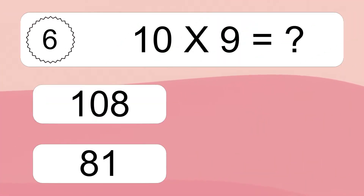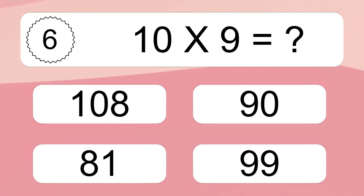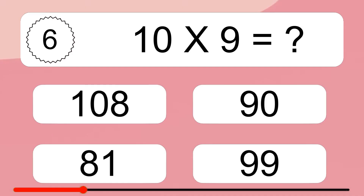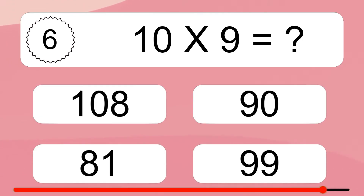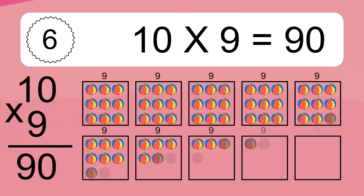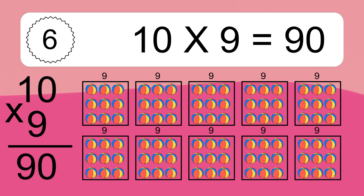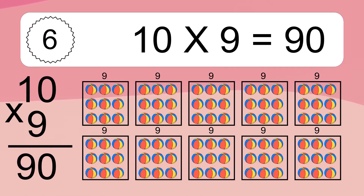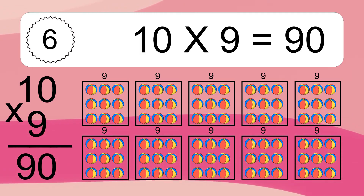10 times 9 equals what? 10 times 9 equals 90. We have 10 boxes, and each box has 9 colorful balls inside. If you count all the balls in all the boxes together, you will have 10 times 9 balls. This equals 90 balls.